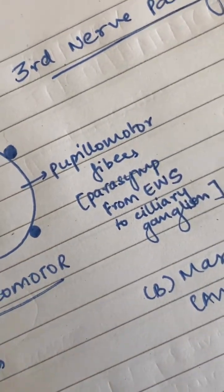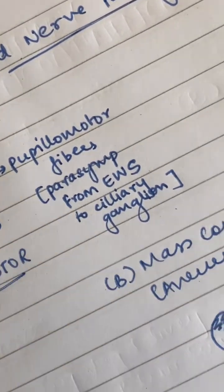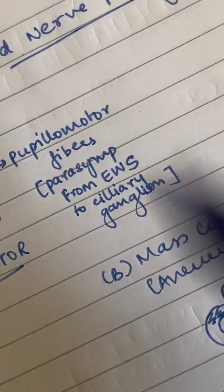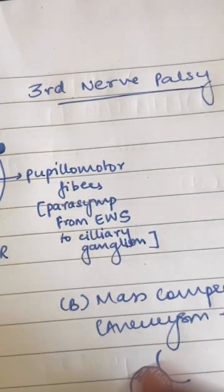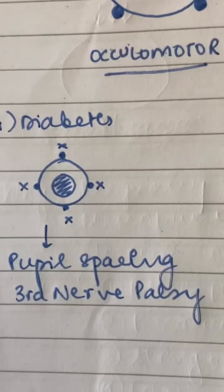have the pupillomotor fibers. These are the parasympathetic fibers from the Edinger-Westphal nucleus, and these go to the ciliary ganglion via the oculomotor nerve. You know that third nerve palsy can happen due to two important causes. Number one